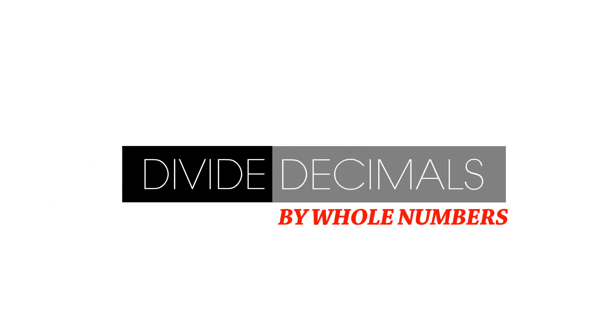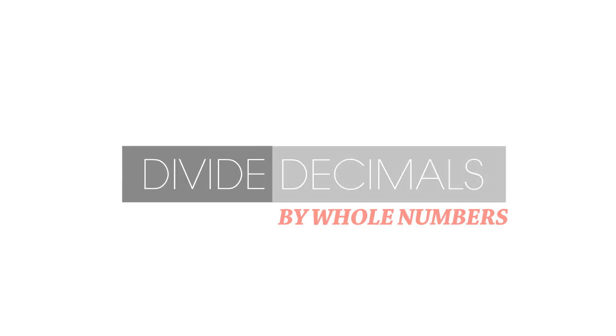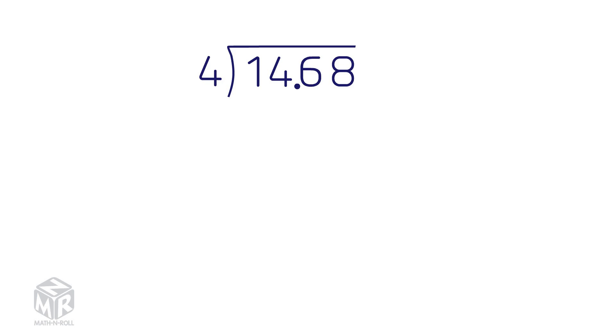Divide decimals by whole numbers. Let's try an example. 14.68 is our decimal, and it's being divided by 4, which is our whole number.